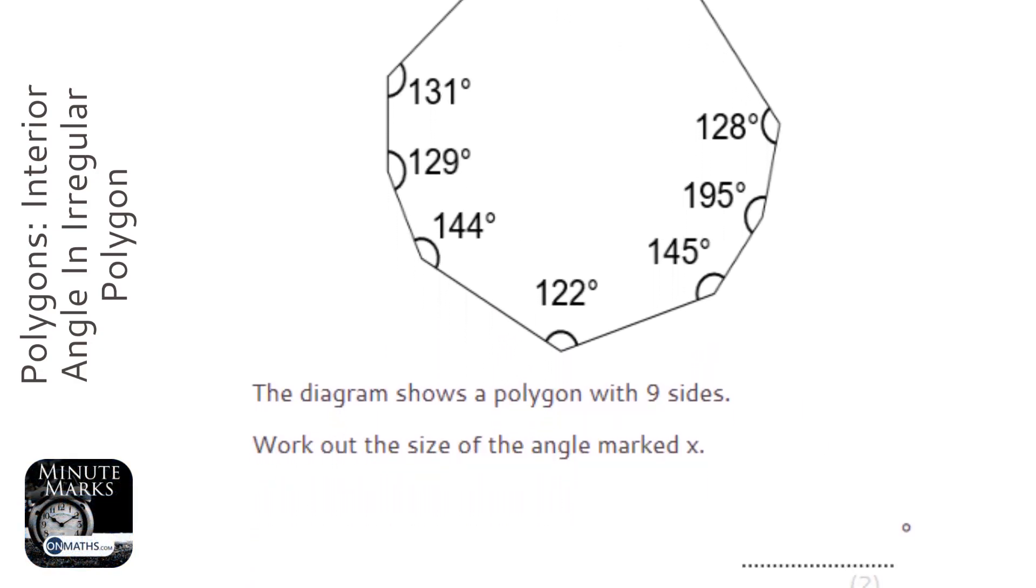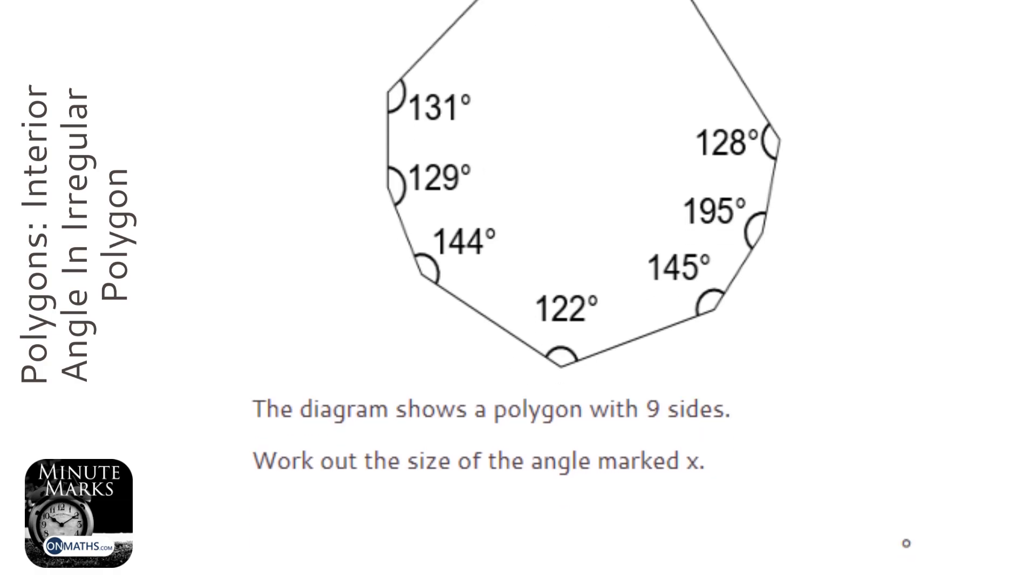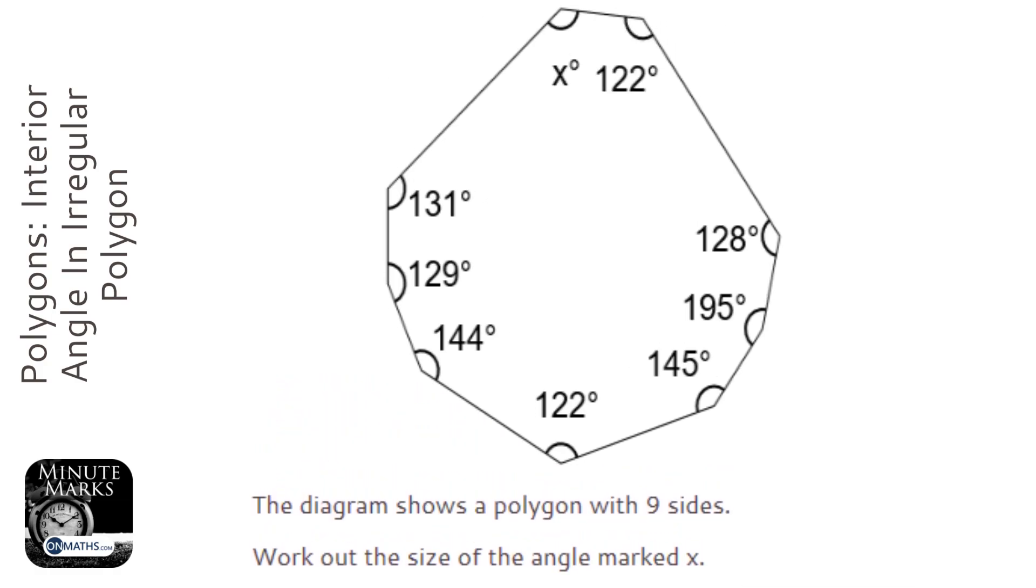Okay, so we're given a nine-sided polygon here with loads of angles on it, and we're asked to find out the angle x.